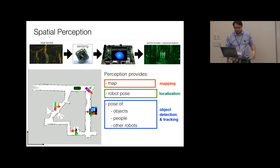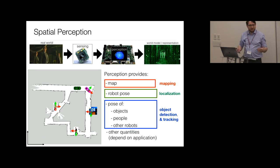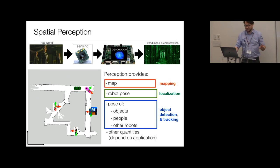Besides estimating the map and the robot's pose, you may also want to estimate the pose of other objects, robots, or people in the environment — this is called object detection and tracking. Depending on the application, you might want to build a map of temperature or any other quantity. What perception has to provide really depends on the task that you need to complete.